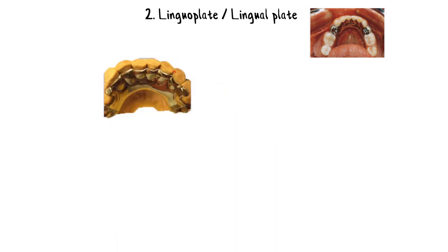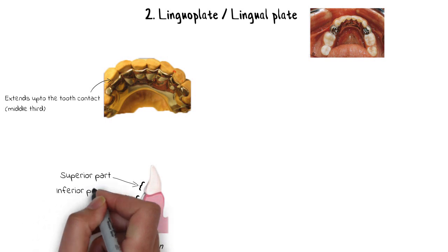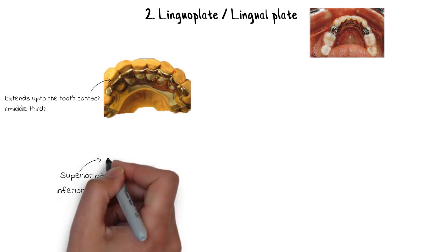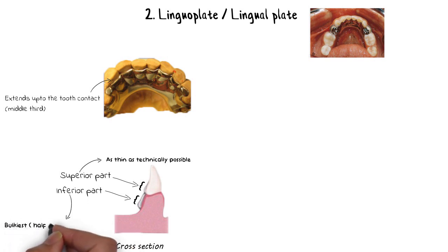The lingual plate has a design that extends along the lingual surfaces of the teeth up to the proximal contacts, but should not exceed above the middle third except to cover the interproximal spaces. It has two parts: a superior border extending towards the teeth, and an inferior part located just above the floor of the mouth.